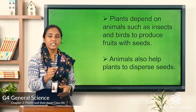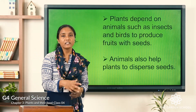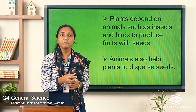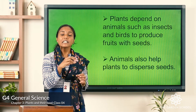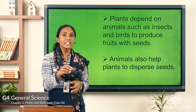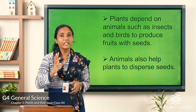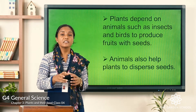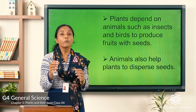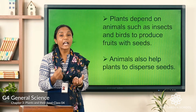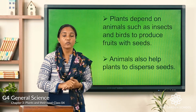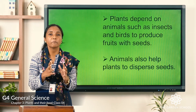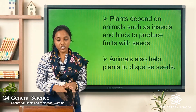Animals also help plants to disperse seeds. In jungles, when birds or animals eat fruits, they don't eat in the same place — they carry the fruit and move to other places, dispersing seeds and helping plants grow in other locations. This is how plants and animals depend on each other.